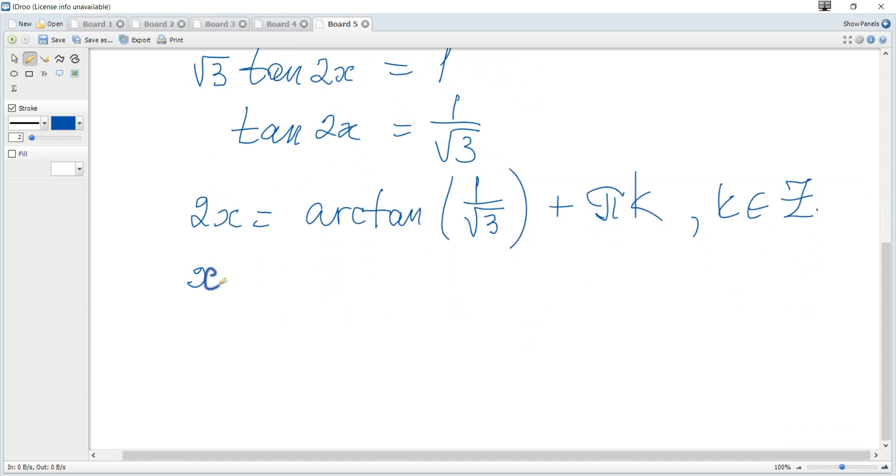We can find arctan(1/√3). Since tan(π/6) = 1/√3, it's π/6 + πk. Since we need x, we divide each term by 2. Hence x = π/12 + (π/2)k.